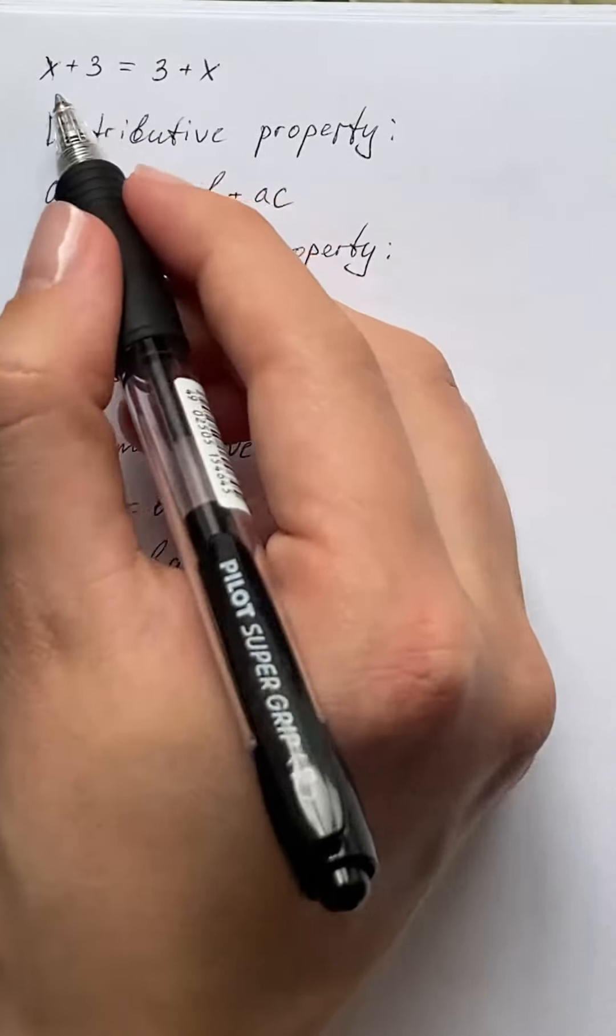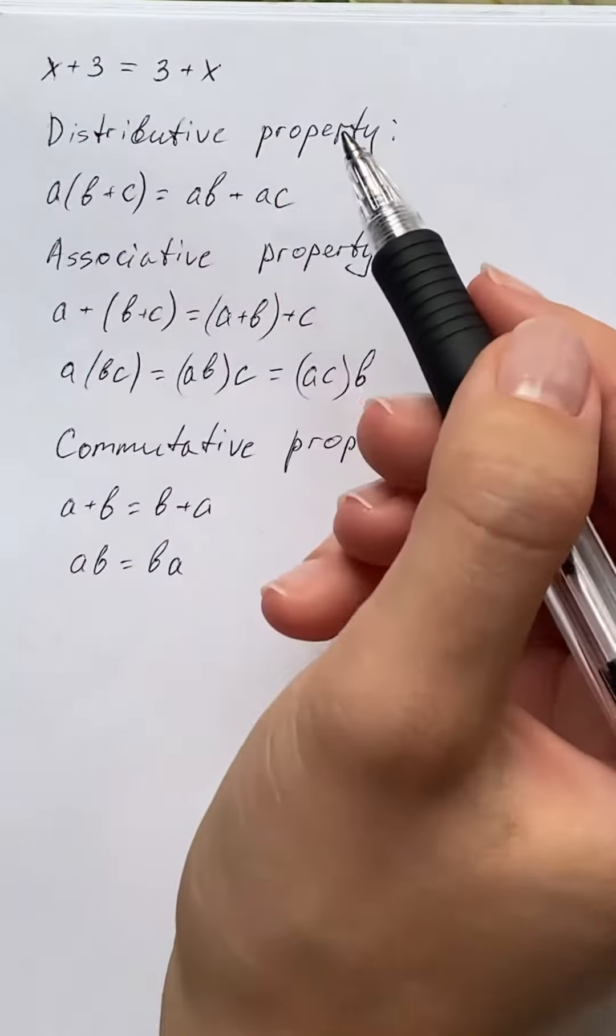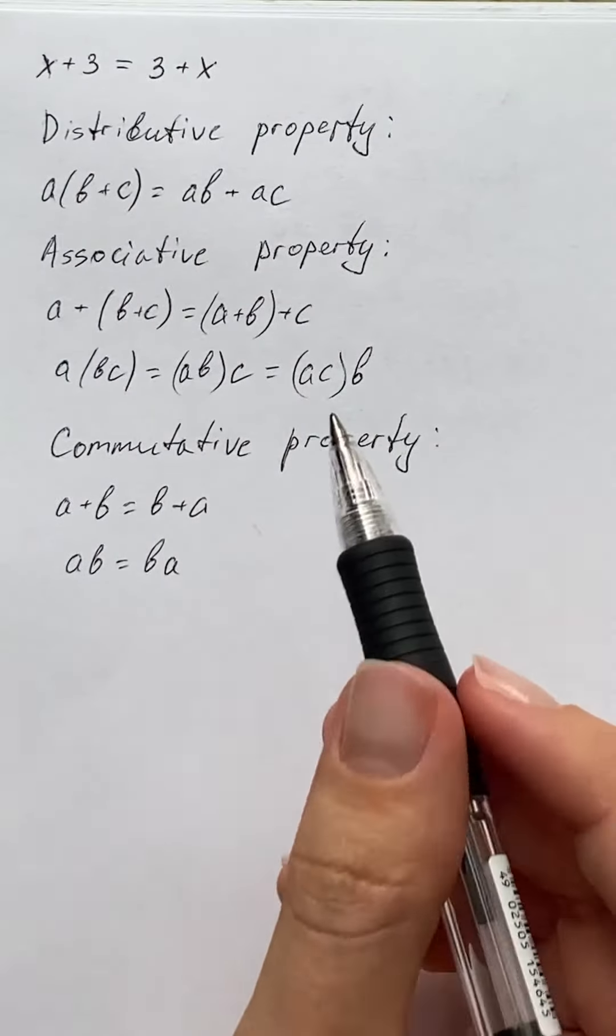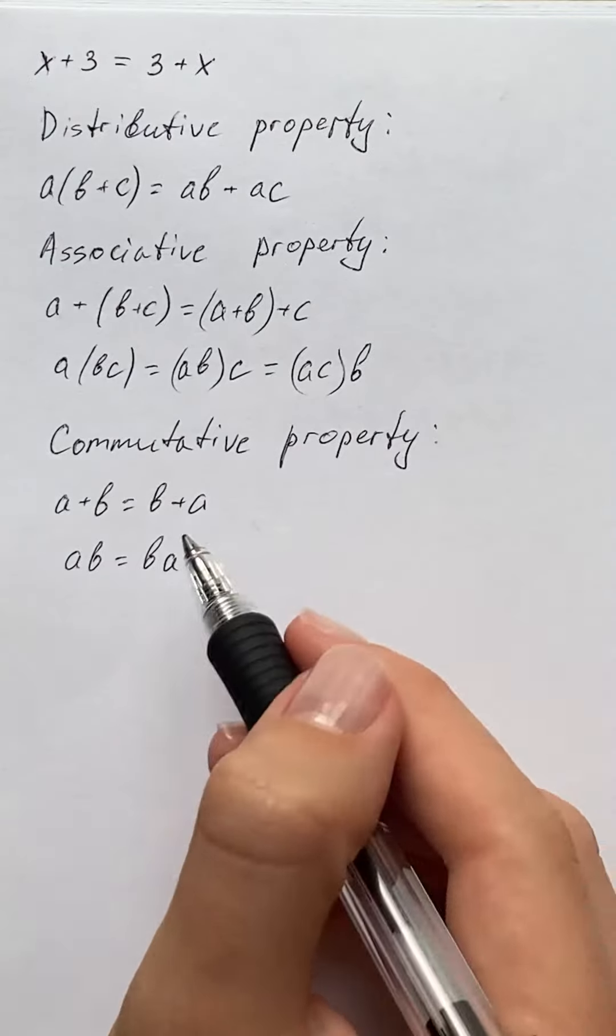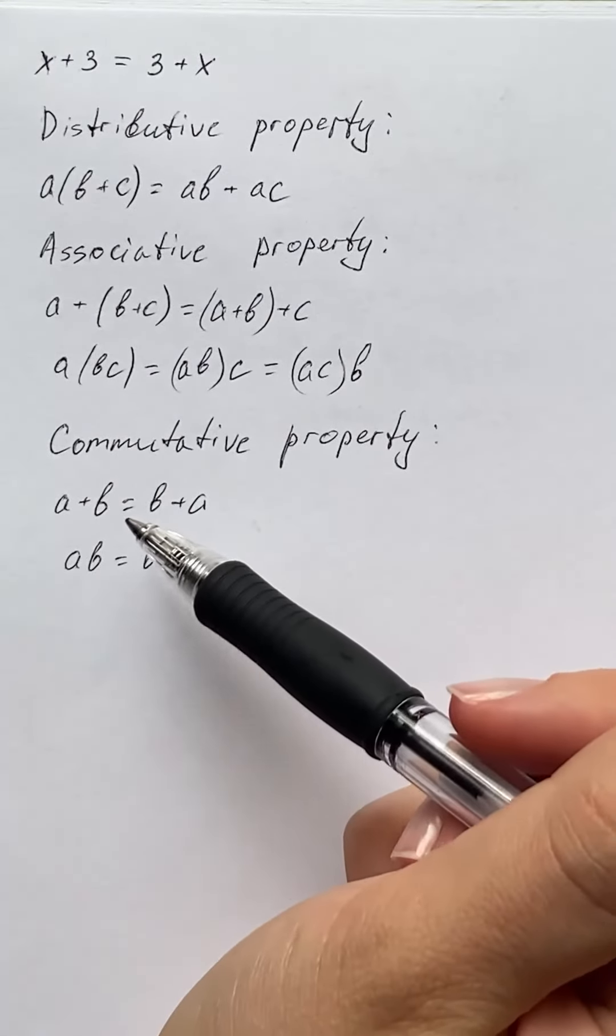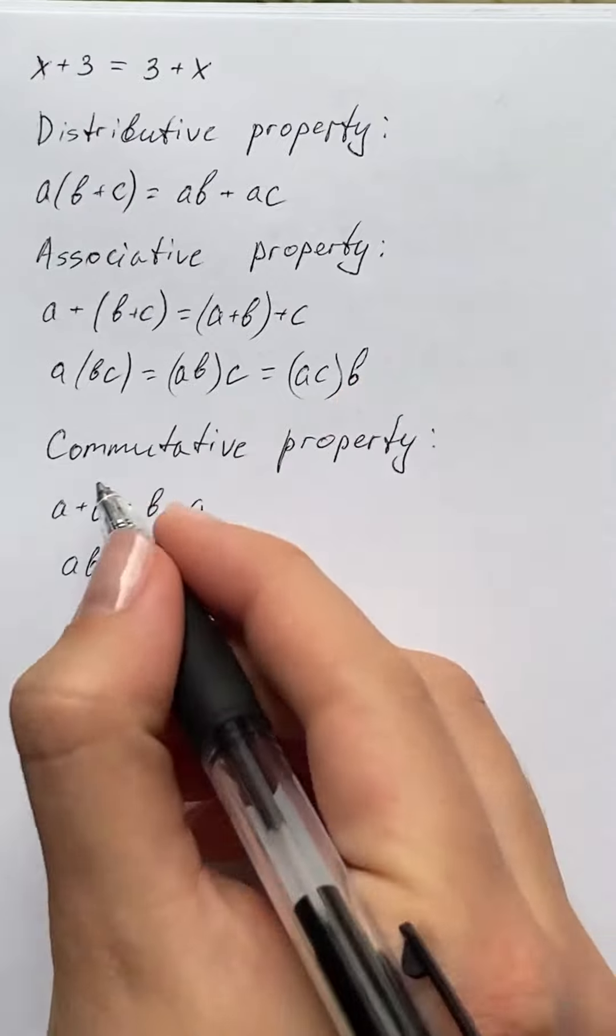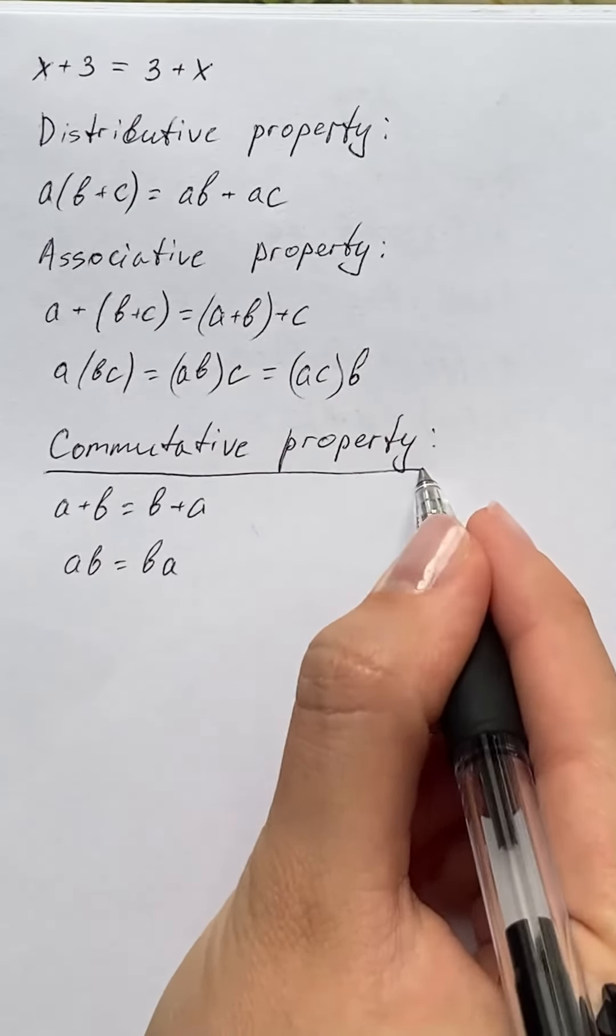The given equation is x + 3 = 3 + x. We can observe that this equation is using the commutative property, so that's a + b = b + a. This is our property.